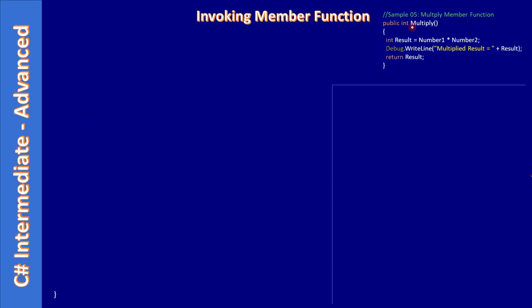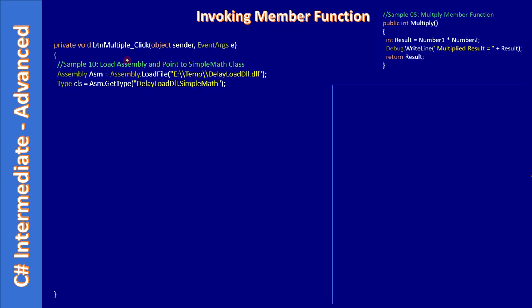Now let's look at invoking the member function. If you see here, we are going to call this Multiply method — this is not a static method, it's a member method. To call this method we need to create an instance, and that instance should have internal members number one and number two initialized by a constructor. Once you invoke Multiply, we will be using those internal members and printing the result as well as returning it.